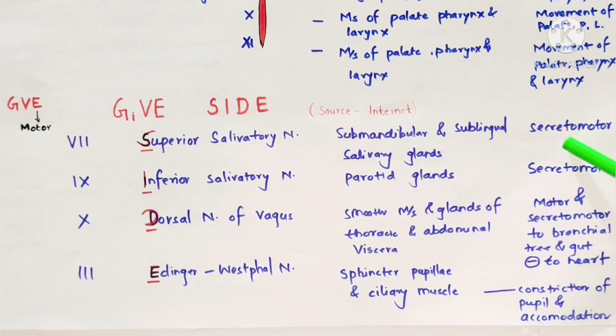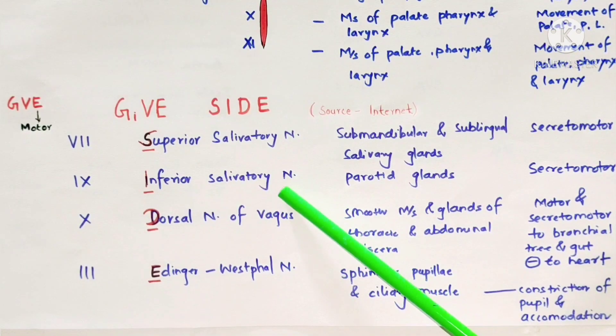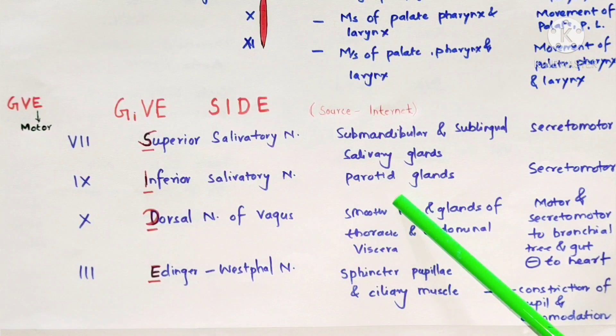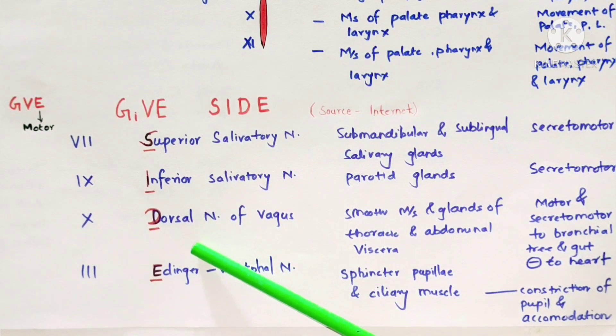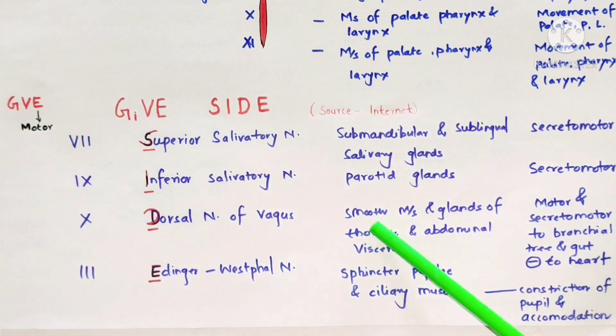S for superior salivatory nucleus of facial nerve supplies submandibular and sublingual salivary glands. The function is secretomotor.